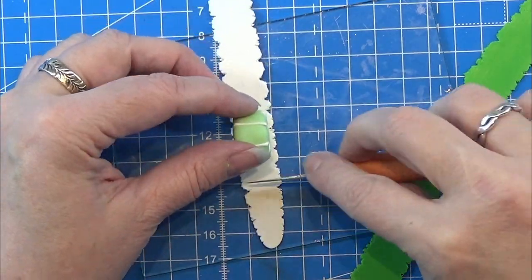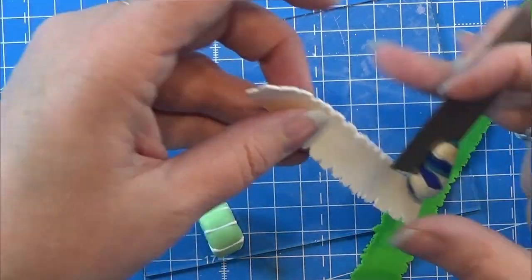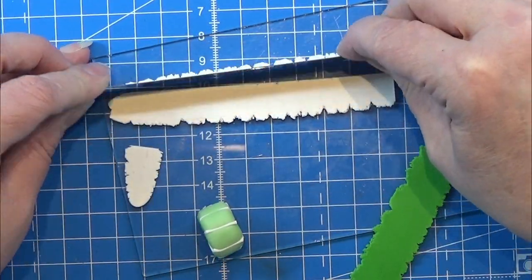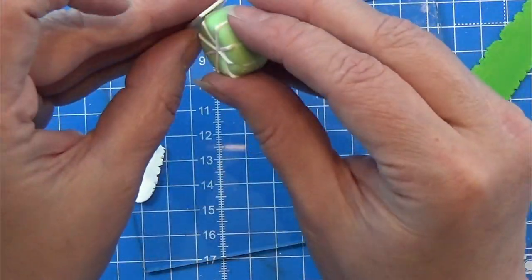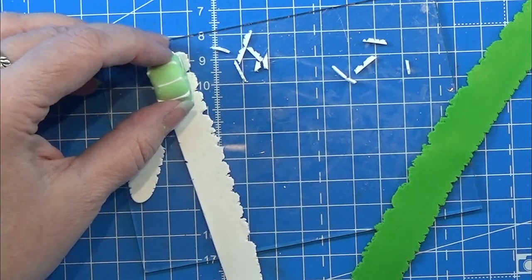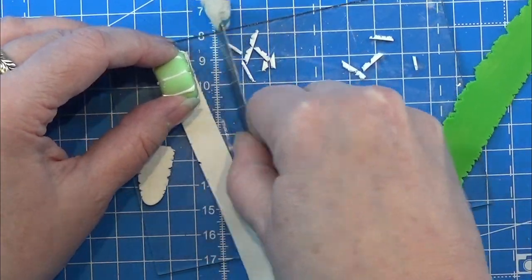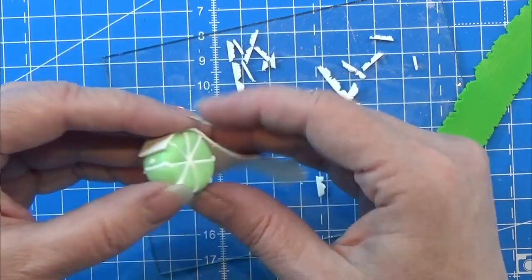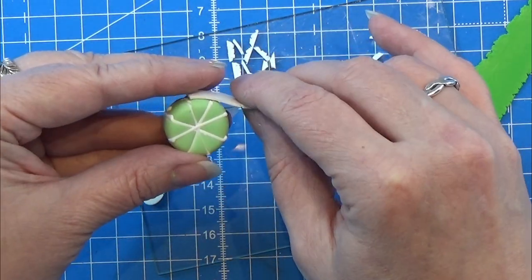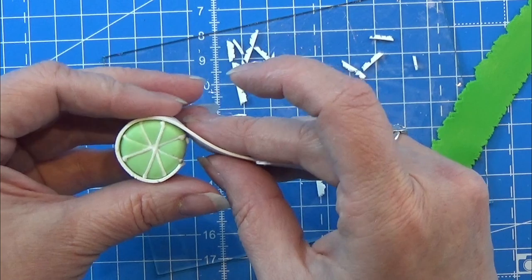Then I rolled out the white here on a setting three or four, I think it was a setting four on my pasta machine, so it's a little thicker than the ones we put in between the green. I am just making sure I have some white that I can place all around the edge here of this lime.